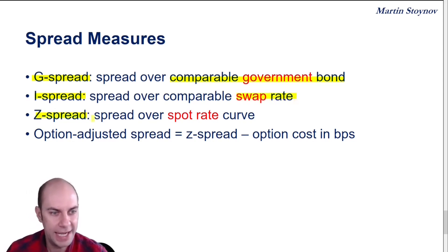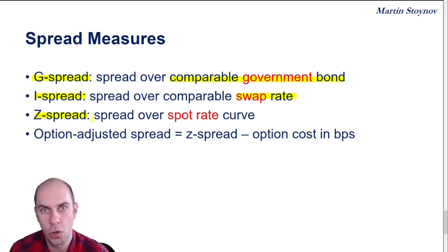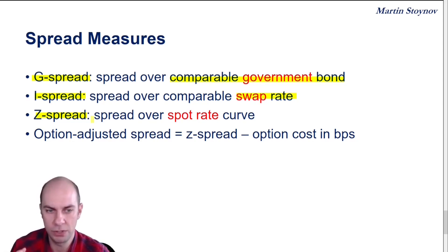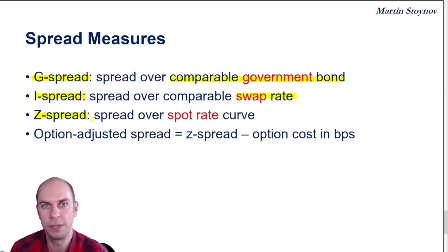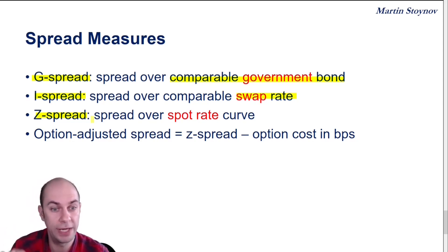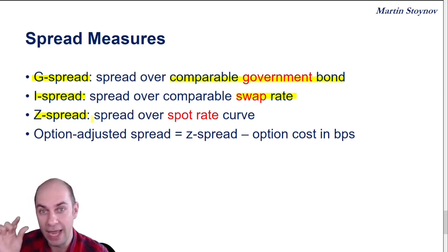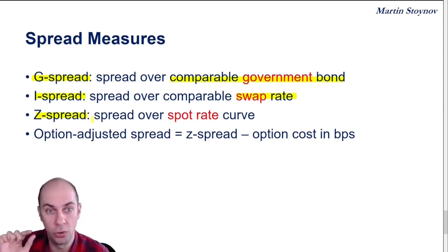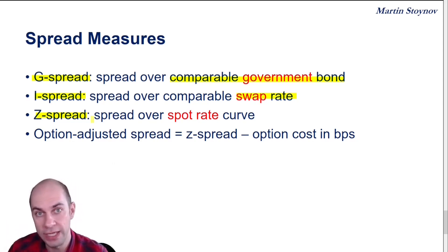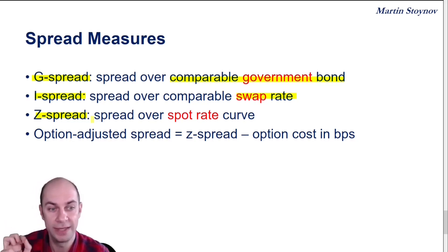Then I've got the Z spread. The Z letter here stands for zero volatility. So we are assuming a constant term structure of interest rates. What that basically means is that we're going to be given the spot rate curve for the benchmark risk-free security. We're going to take into account each individual spot rate and apply a certain cushion measured in basis points, and it's going to be a constant cushion in order to force the model price to become equal to the market price of the bond. That'll be the Z spread.